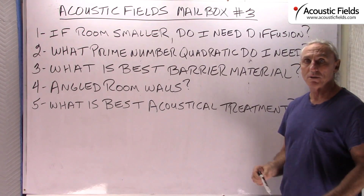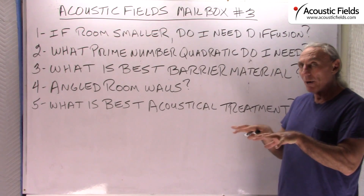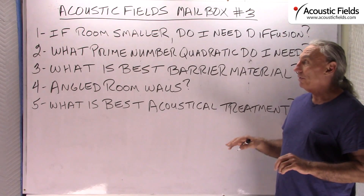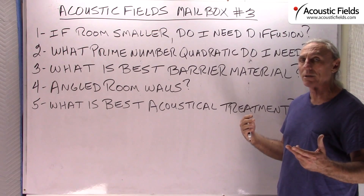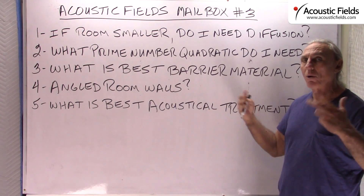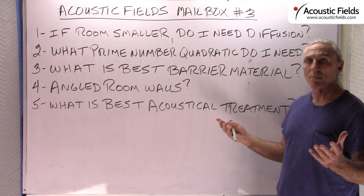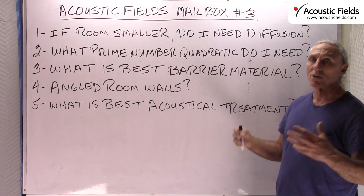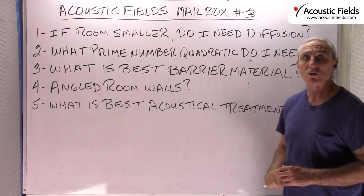So back to diffusion — what does diffusion do? It minimizes the reflection by breaking it down into a bunch of little reflections. It confuses our brain so we can't localize where the boundary surface is. The room sounds more open and larger than it actually is. Notes have more separation and definition, so diffusion makes small rooms sound larger.